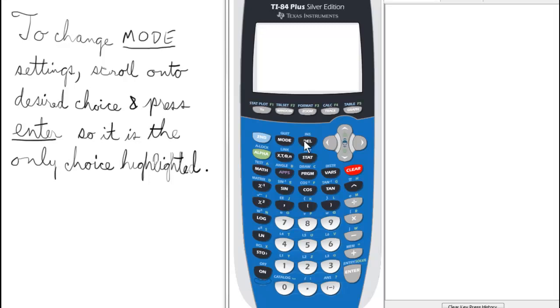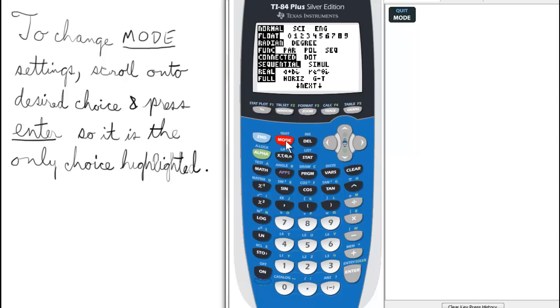To enter the mode screen, all we need to do is press mode, and we have the first page of mode. Notice all the default settings are on the left: normal, float, radian, function, etc.